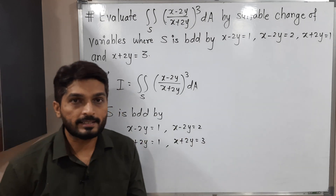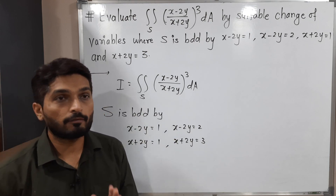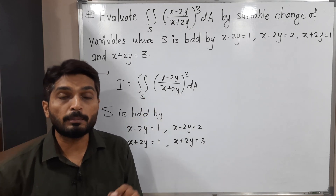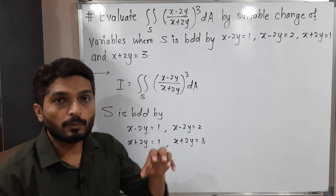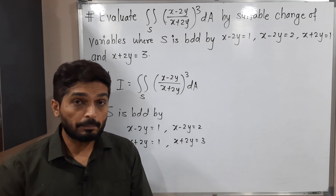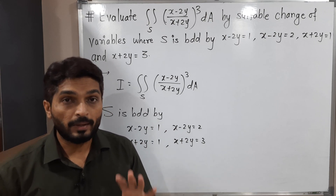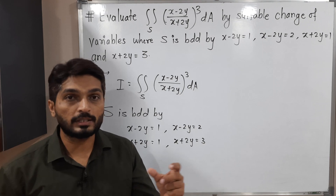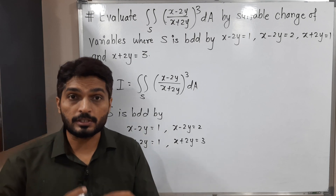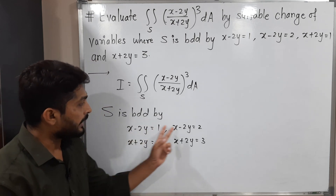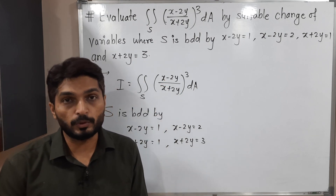Since the power of x and y is 1, all these are straight lines. The region is bounded by these four straight lines and we have to solve this double integration with a suitable change of variables. We have to put some equation equal to u and something equal to v — converting the entire problem into new variables u and v to make it simpler. The equations suggest that x minus 2y is repeating, so it's better to put that term equal to u.